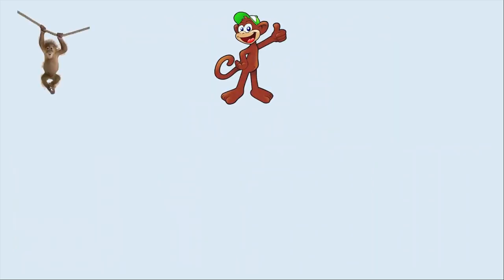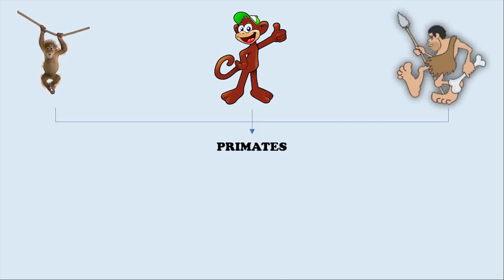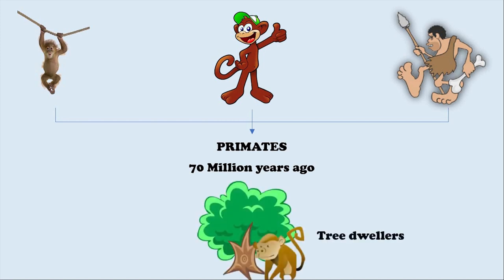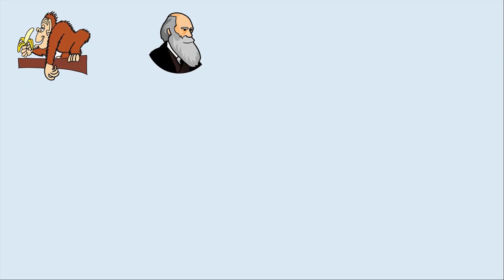Apes and monkeys bear the closest resemblance to the extinct human being. They belong to the same order called primate. Primates began evolving about 70 million years ago. They evolved as competent tree-dwellers.